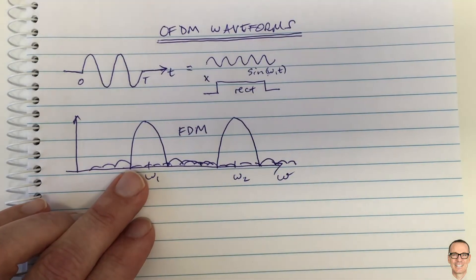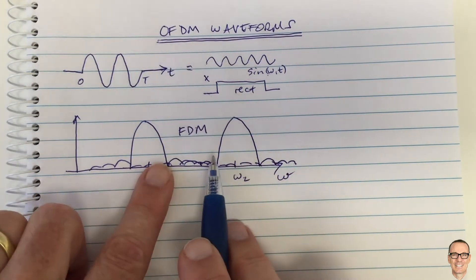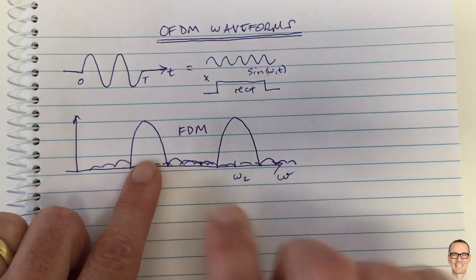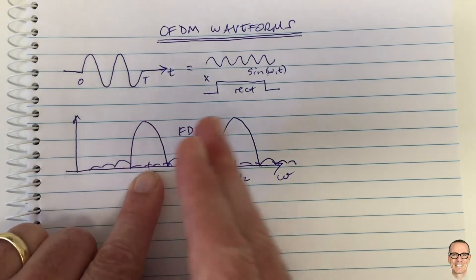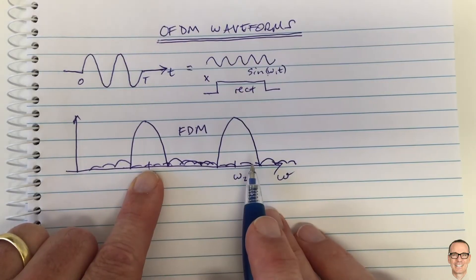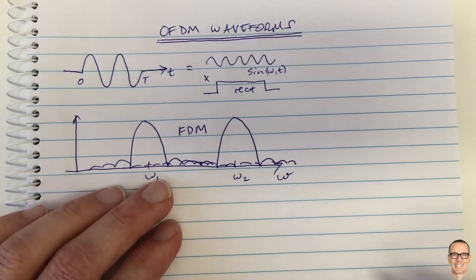Now can we be more clever than that? And that's the key to orthogonal frequency division multiplexing. We'd like to use the spectrum more efficiently, we'd like to be able to put these carriers closer together so we can fit more parallel channels, more data channels. So how do we go about doing that?